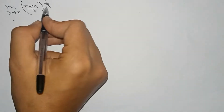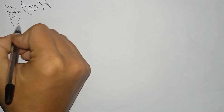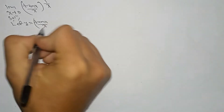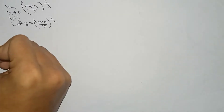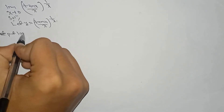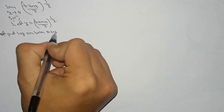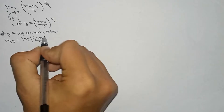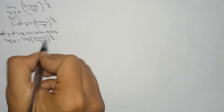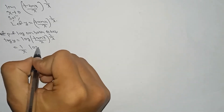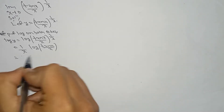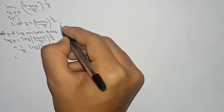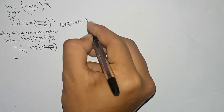Here is the question: limit x tends to 0 of (tan x / x) to the power 1/x. For the solution, let y equal to (tan x / x)^(1/x). Put log on both sides, so we get log y equal to log(tan x / x) times (1/x). The power is taken out: (1/x) log(tan x / x). Using the formula log(a/b) = log a minus log b, it becomes (log tan x minus log x) / x.